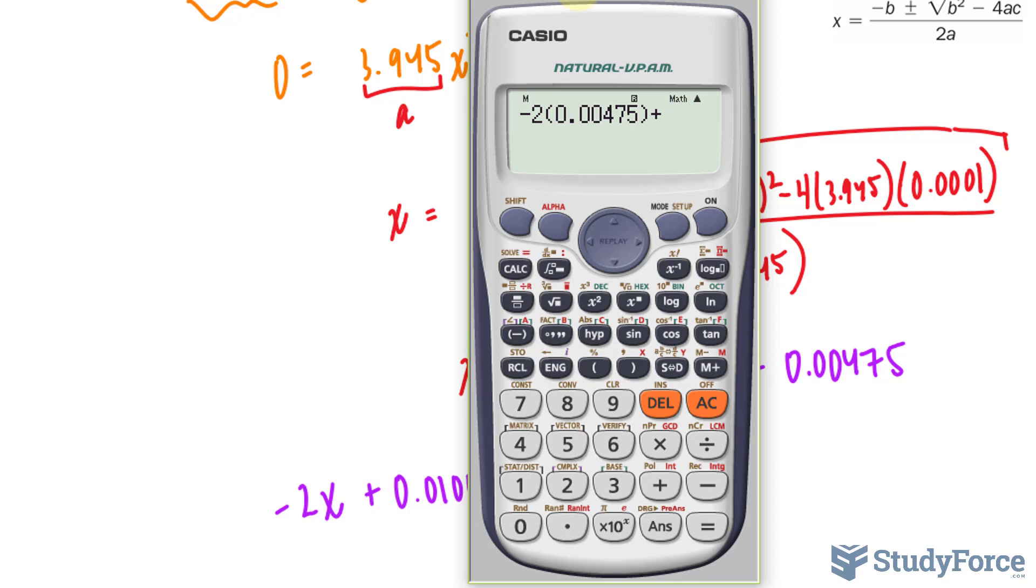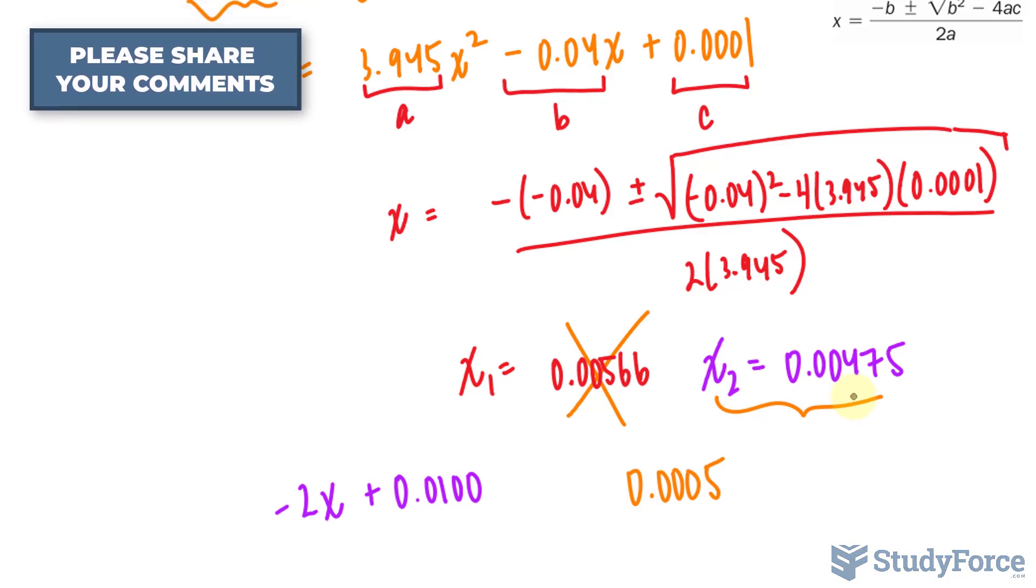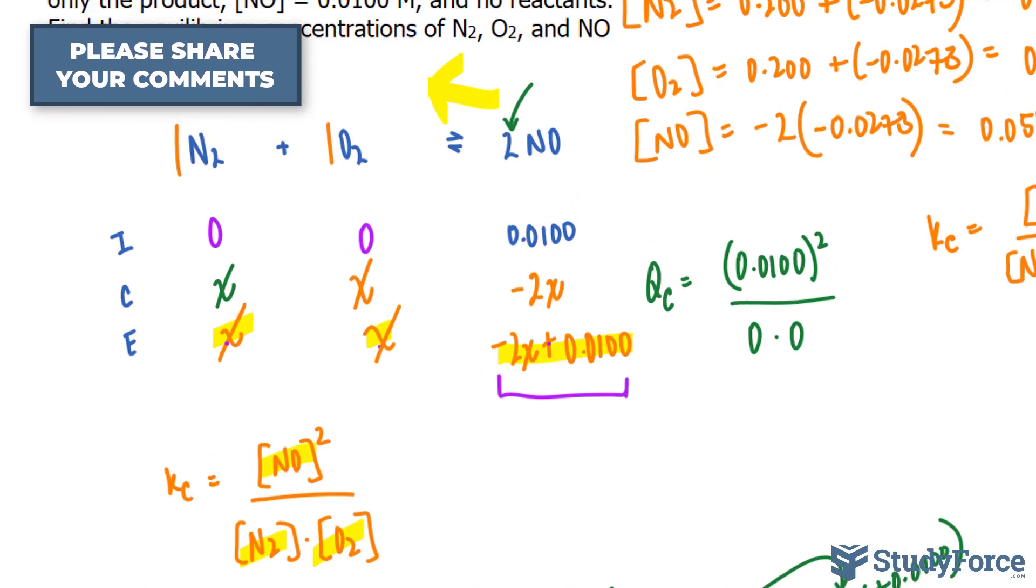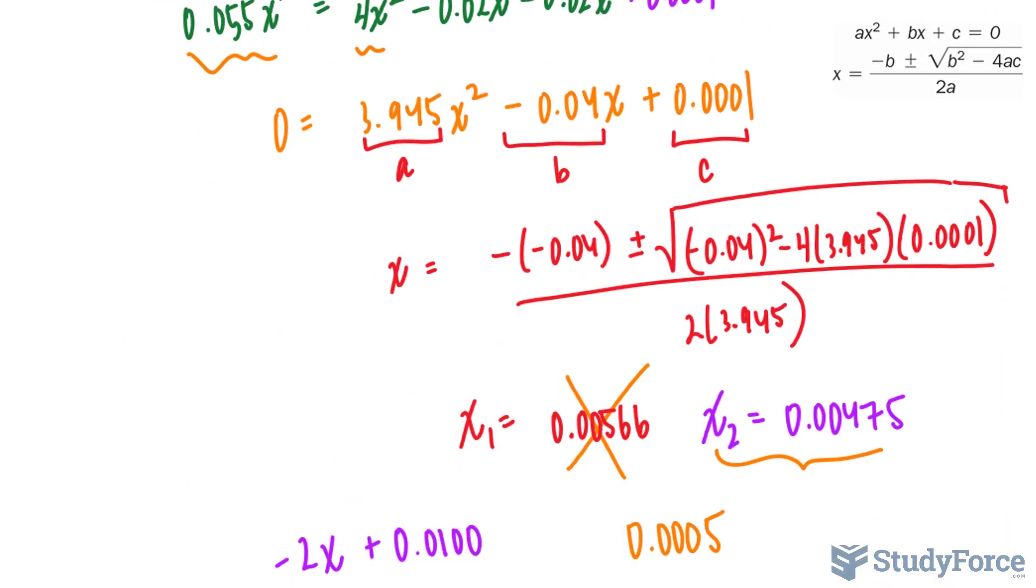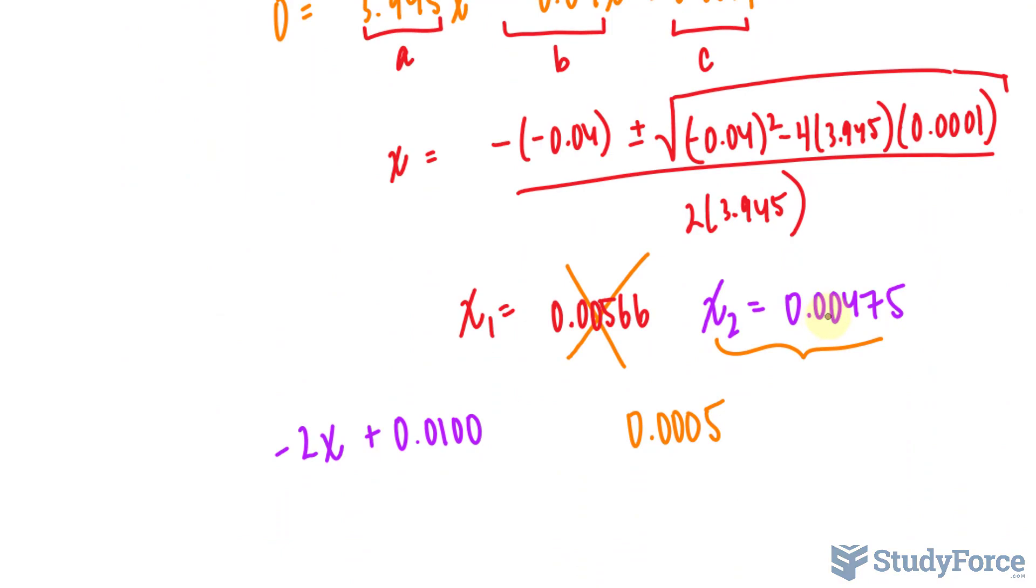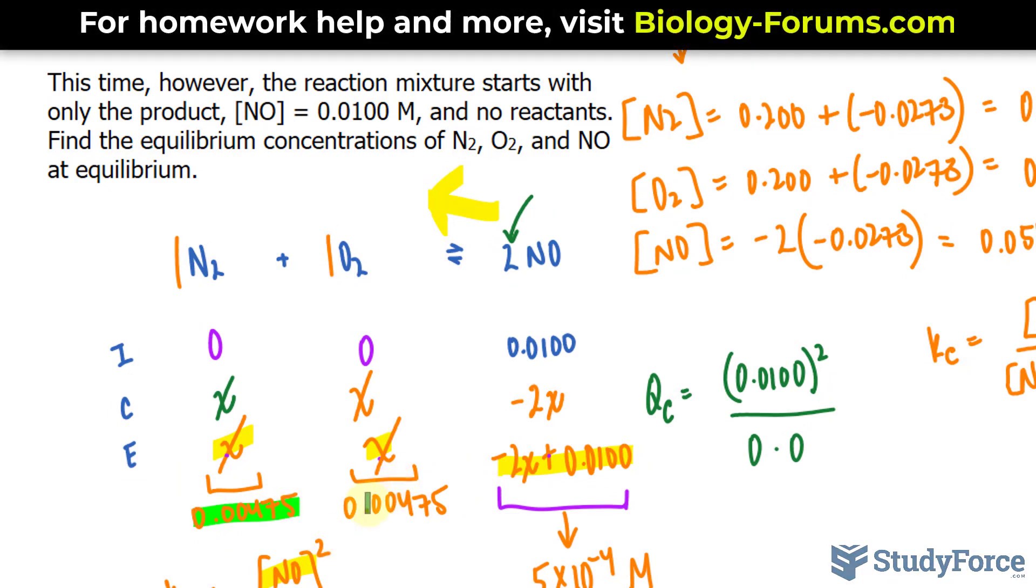What about this one? Negative 2 times 0.00475, plus 0.0100, and this time, the output is positive. So you can tell that this number is more likely to be correct than the other one, and we'll be using that as our X's here. So this comes out to be 5 times 10 to the power of negative 4 molar, and these two come out to be 0.00475.